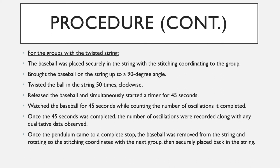For groups three and four I was going to be twisting the string, so I made sure that the ball was secure in the string and that the stitching coordinated with the group — group three having vertical stitching and group four having horizontal stitching. I brought the baseball up to a 90-degree angle and then twisted the ball in the string 50 times clockwise. Then I released the ball and started a timer for 45 seconds at the same time. During the 45 seconds I was counting the number of oscillations completed, and once the 45 seconds was up I recorded the number of oscillations completed along with writing down qualitative data that I observed. Then I allowed the pendulum to come to a complete stop, removed the baseball from the string, and rotated it so that the stitching coordinated with the next group that I would be trying.